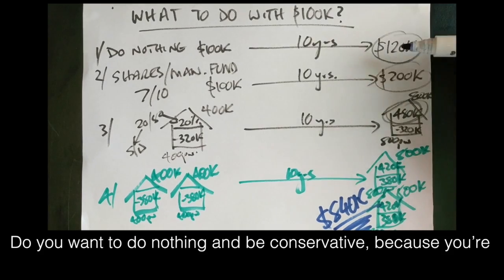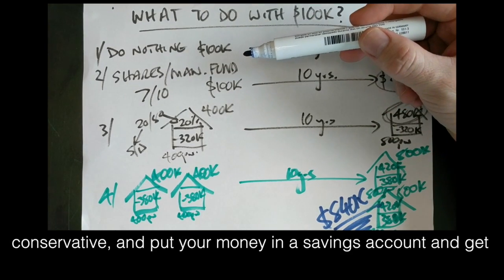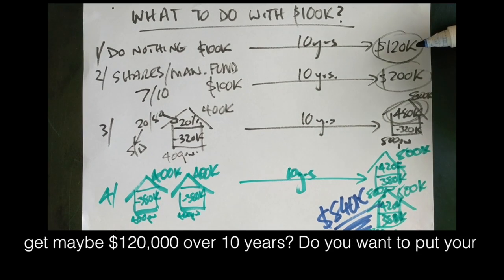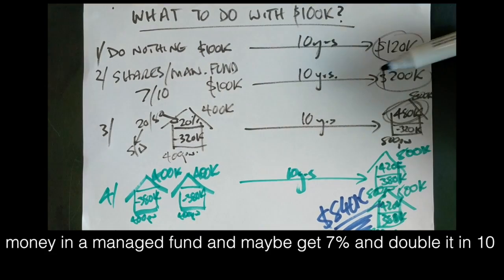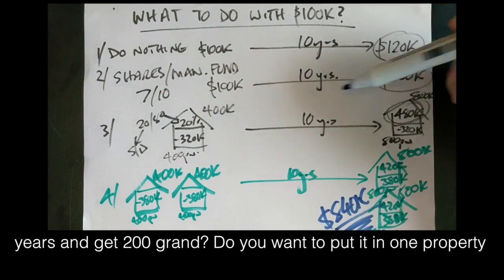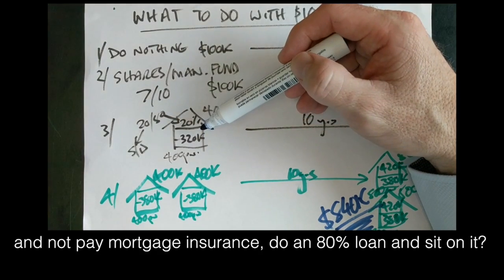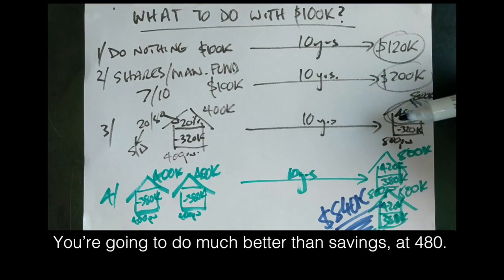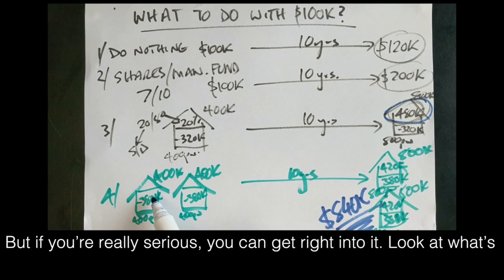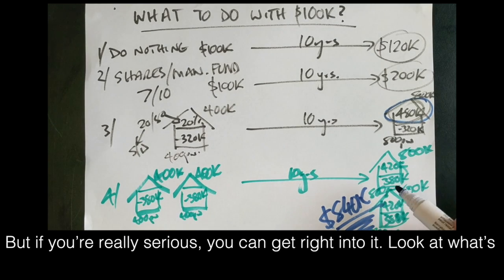So what do you want? Do you want to do nothing and be conservative because you're conservative and put your money in a savings account and get like maybe $120,000 over 10 years? Do you want to put your money in a managed fund and maybe get 7% and double it in 10 years, get $200,000? Do you want to put it in one property and not pay mortgage insurance, do an 80% loan and sit on it? Well, then you're going to be much better than savings at $480,000. But if you're really serious and get right into it, look at what's possible.